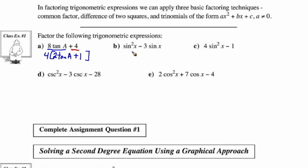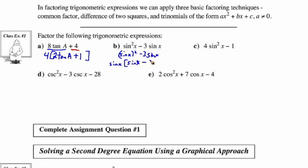Now let's factor sine squared x minus 3 sine x. Remember that sine squared x can be thought of as sine x all squared, minus 3 sine x. We can see there's a sine x in each term, so when we factor sine x out, we get sine x times the quantity sine x minus 3.